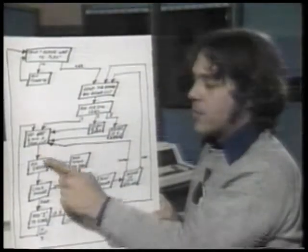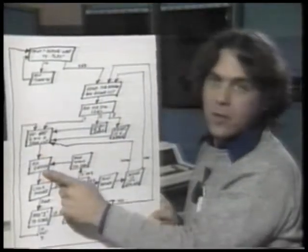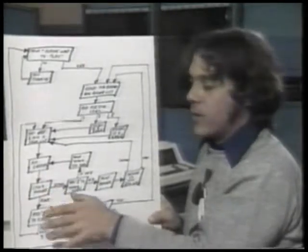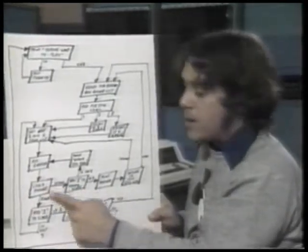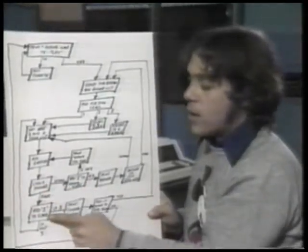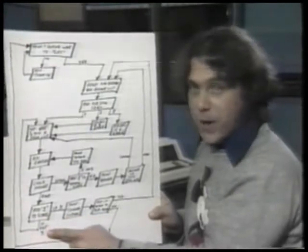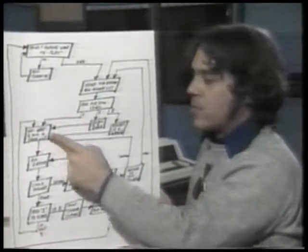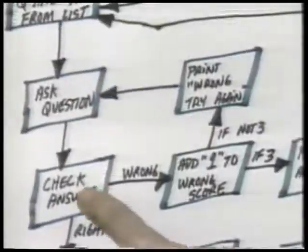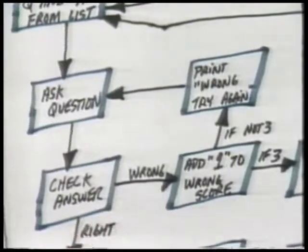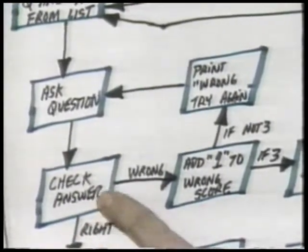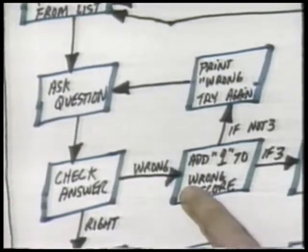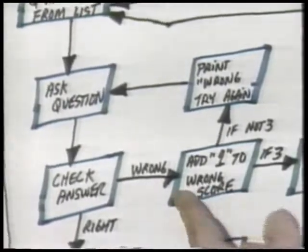Once it's got a question and answer from the list, it asks the question, then checks your answer. If your answer's right, it'll add a one to your score, and if your score isn't three yet, it will go back and get the next question and answer from the list. If the answer comes up wrong, it adds a one to your wrong score, because it's only going to let you do that three times.